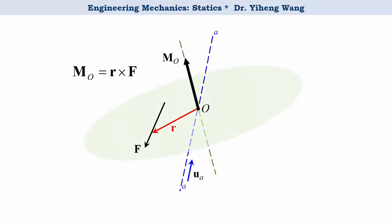But since moment is a vector, just like any other vector we can resolve it into components according to the parallelogram law. Therefore, we can resolve it into one component M A A that is along the A A axis and another component that is perpendicular to the A A axis.